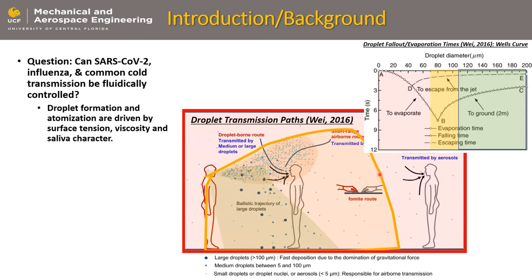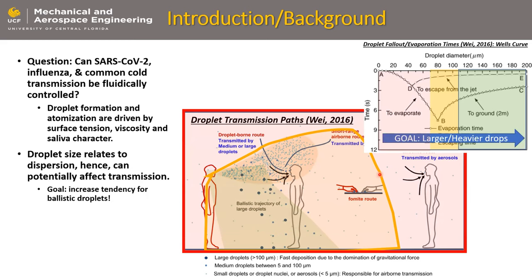What generally happens is the droplet evaporates, leaving essentially a viral particle with a small amount of material that is still survivable and can transmit the illness, but it is very small and just floats around in the air. So the goal we're trying to focus on is: can we control the underlying fluid dynamics associated with the generation of these droplets to generate on average larger, heavier droplets that have a tendency to reduce transmissibility — we want to make these droplets fall rather than spread out around the room.